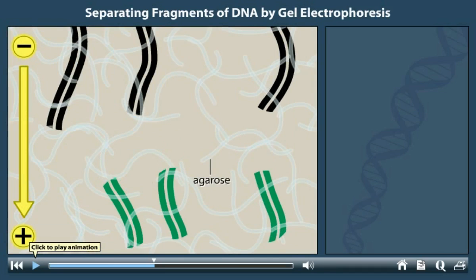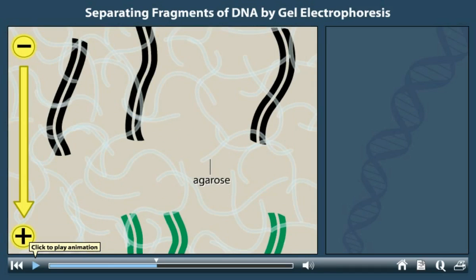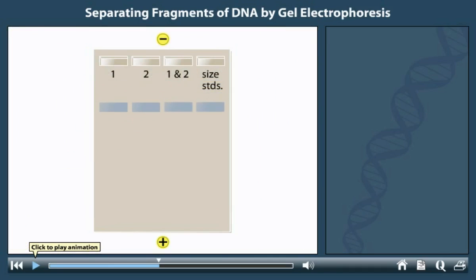The smallest fragments move the fastest, being entangled less in the agarose matrix of the gel. When the blue dye reaches the bottom of the gel, the power is turned off.